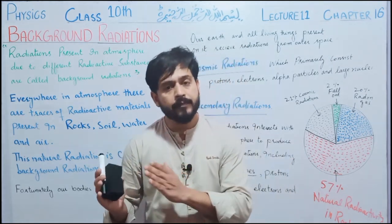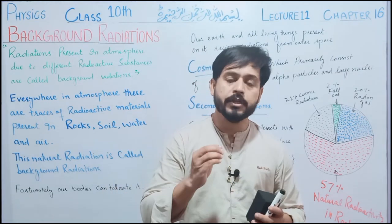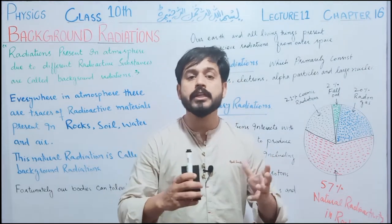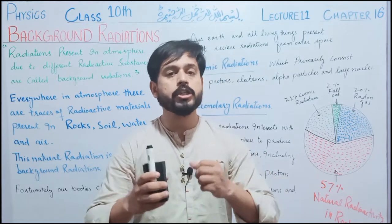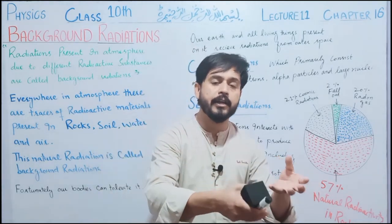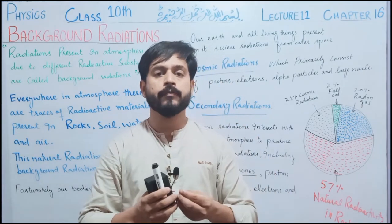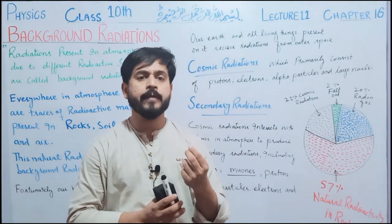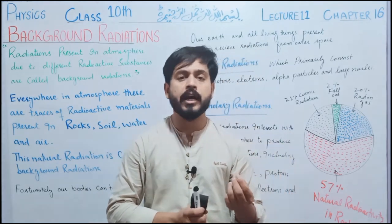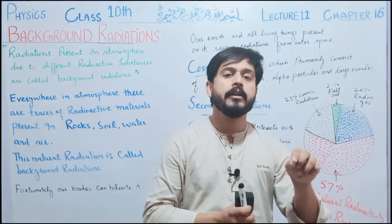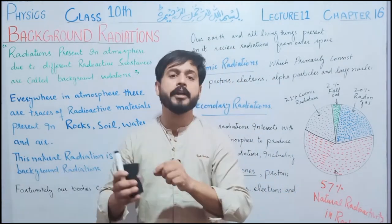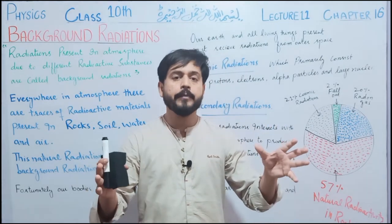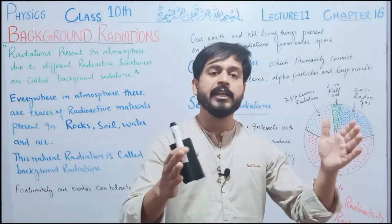چونکہ انسان ان radiations کے متعلق unaware ہوتا ہے، تو یہ بھی ایک وجہ ہے کہ ان کو background radiation کہا جاتا ہے۔ لیکن fortunately، ہماری body ان background radiation کو tolerate کر لیتی ہے۔ اس کی reason یہ ہے کہ ان کے sources کی مقدار بہت کم ہوتی ہے۔ وہ بالکل micro particles، ریت کے ذروں کی طرح چھوٹے چھوٹے traces ہوتے ہیں، جیسے uranium کا کوئی trace یا کسی بھی radioactive material کا انتہائی چھوٹا particle۔ لیکن چونکہ وہ ایک radioactive material کا particle ہے تو وہ definitely radiation release کرے گا۔